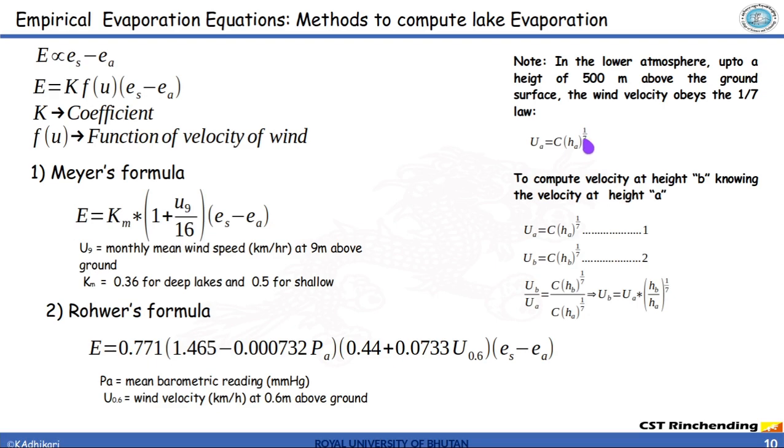For instance, if you know a velocity at a height a, the velocity at height a equal to ua which is equal to coefficient times height ha raised to power 1 by 7. Let it be equation number 1.